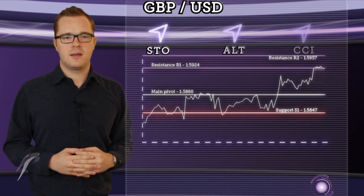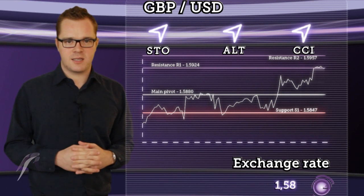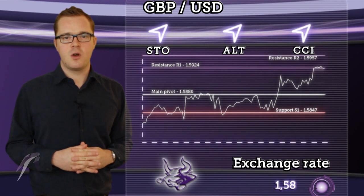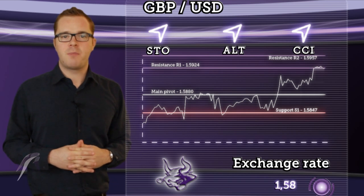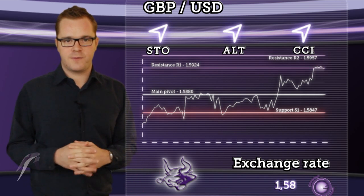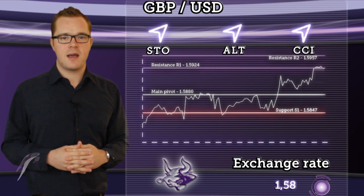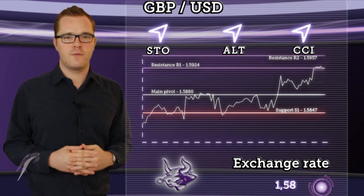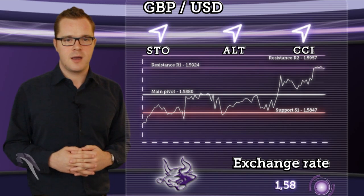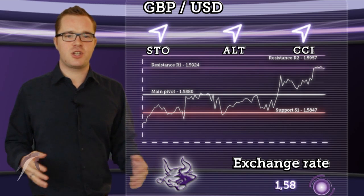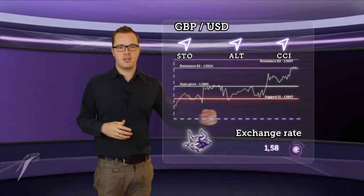Next up is the sterling dollar. Price is now testing resistance R1, and a rise above this level will indicate the next objective at R2. But on the other hand, a fall towards the daily pivot will indicate decline, and a fall below this level will confirm a downward move with a target at S1. Based on Axury's chosen indicators and chart analysis, we can assume a bullish trend.